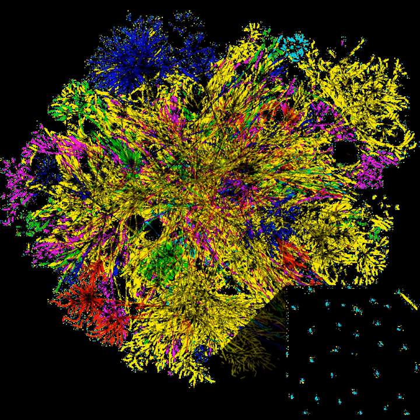As the Internet is a heterogeneous network, the physical characteristics, including for example the data transfer rates of connections, vary widely. It exhibits emergent phenomena that depend on its large-scale organization.